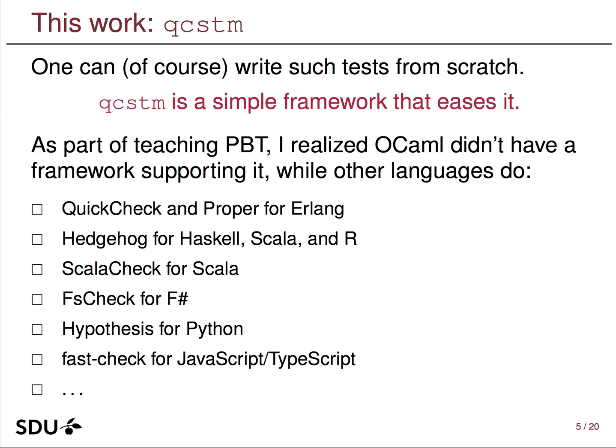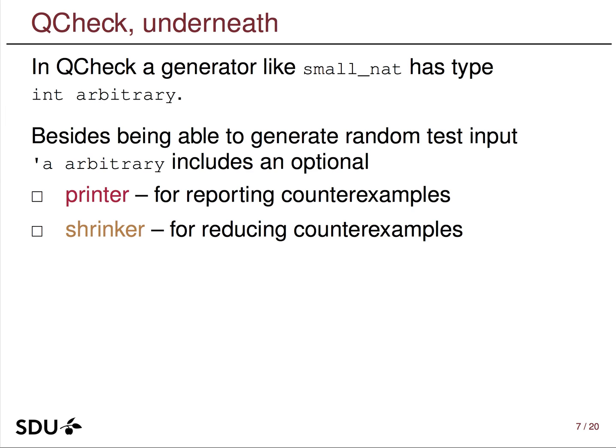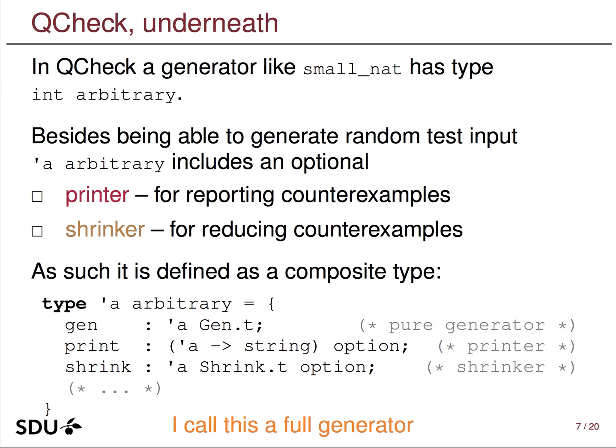Before the example, I need to briefly touch on how QCheck generators work under the hood. A generator like small_nat has type int arbitrary. Arbitrary is a composite type: it can generate things but also has an optional printer for counterexamples and an optional shrinker for reducing counterexamples. It is defined as a record type. I distinguish the pure generator — the gen field — from the full bells-and-whistles record type, which I call the full generator.